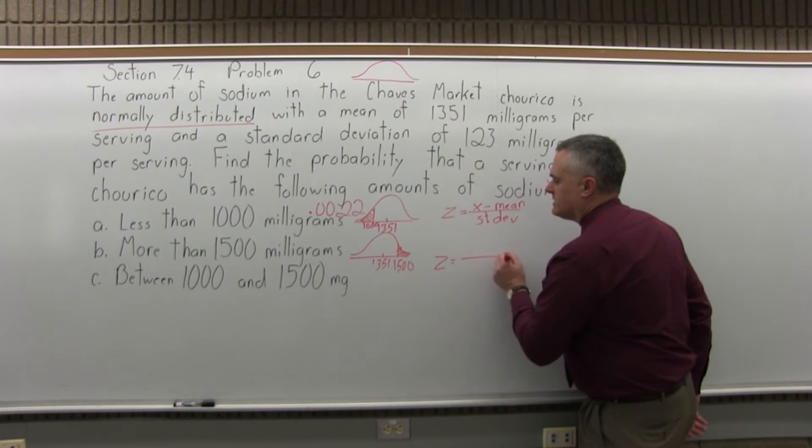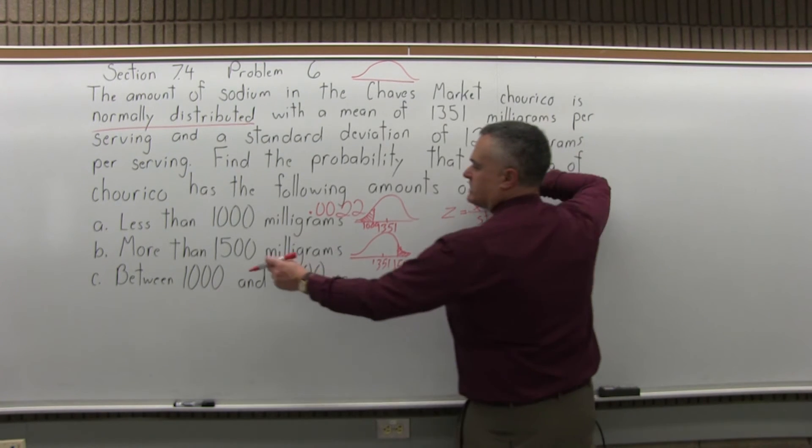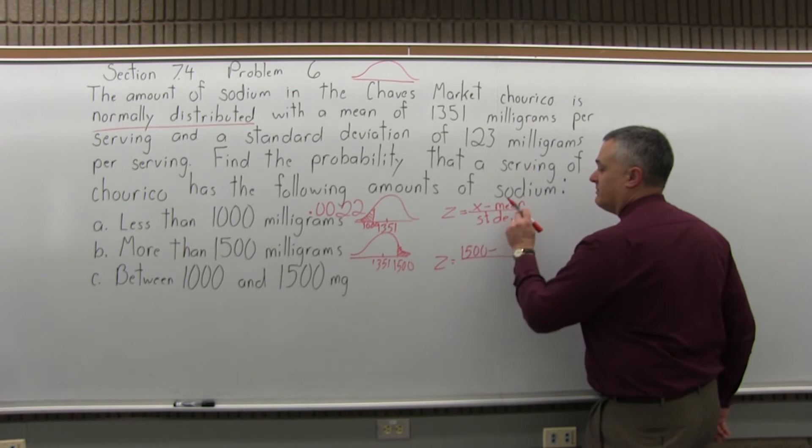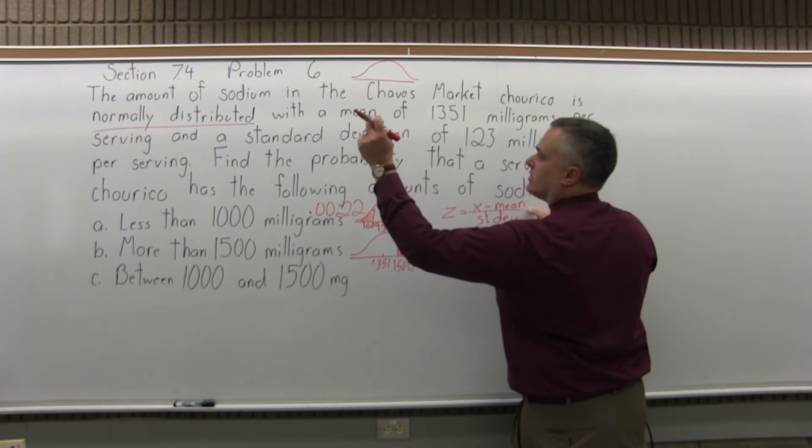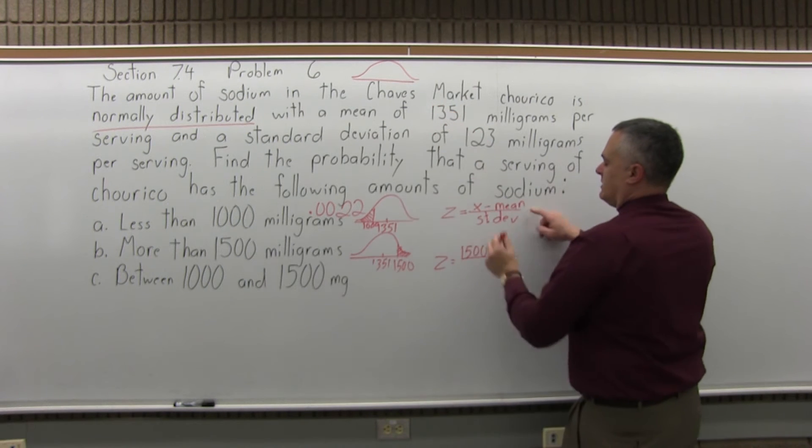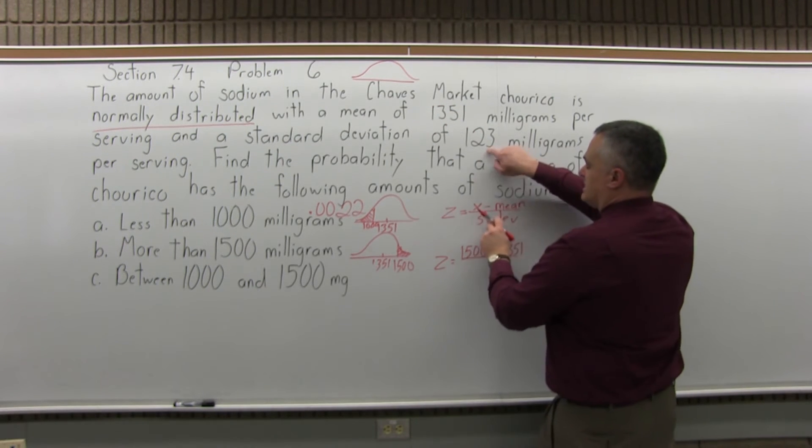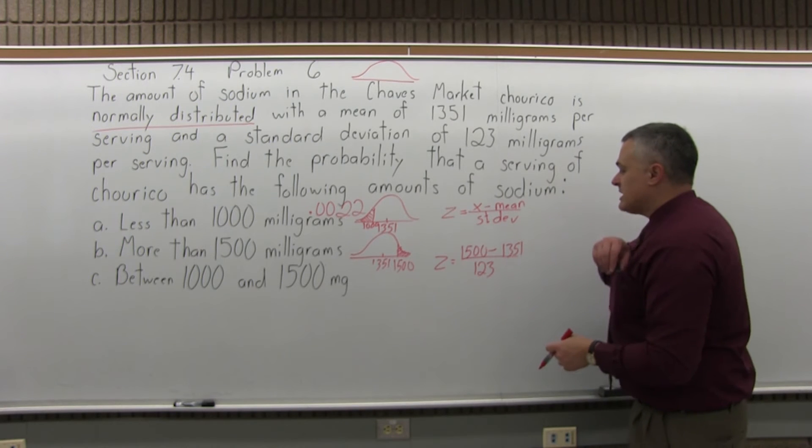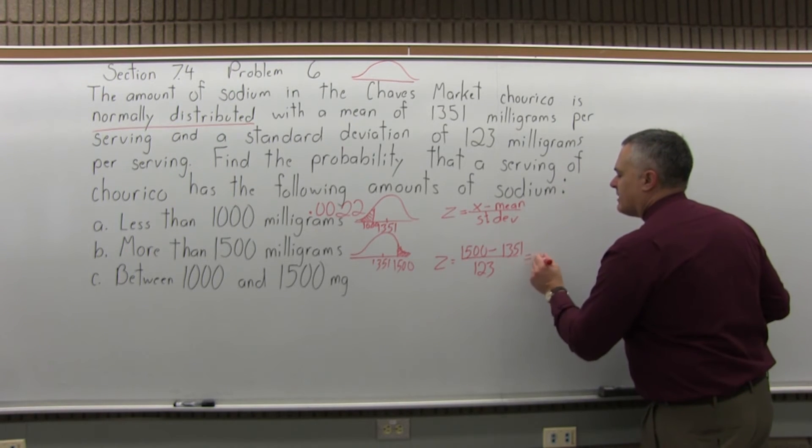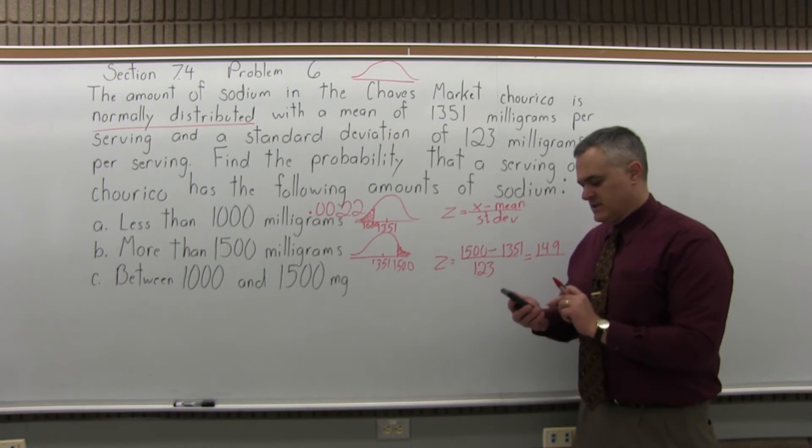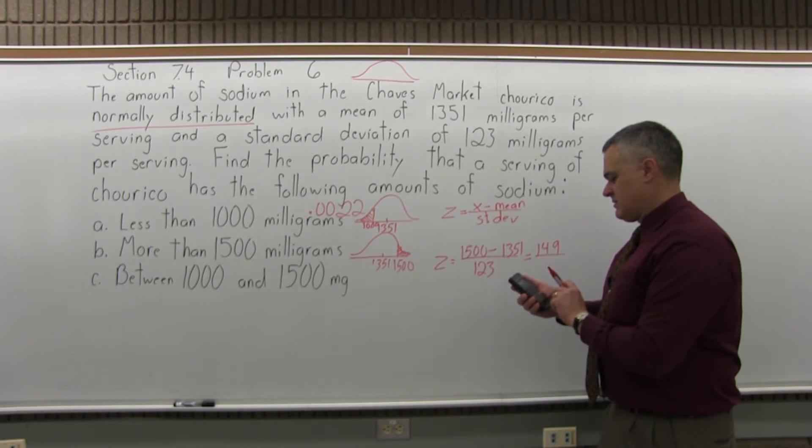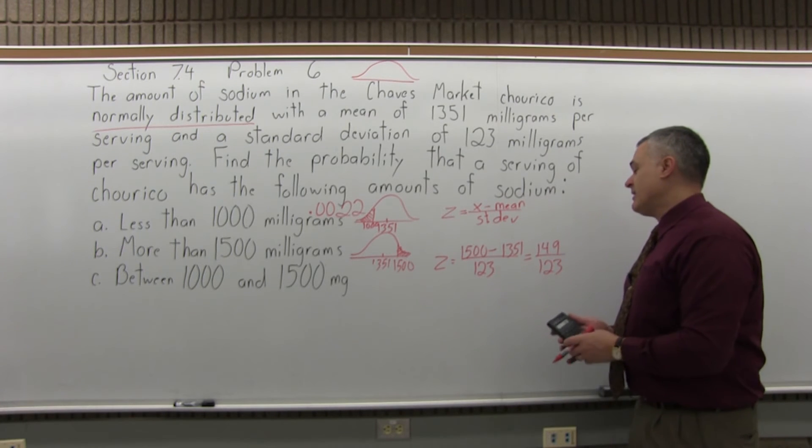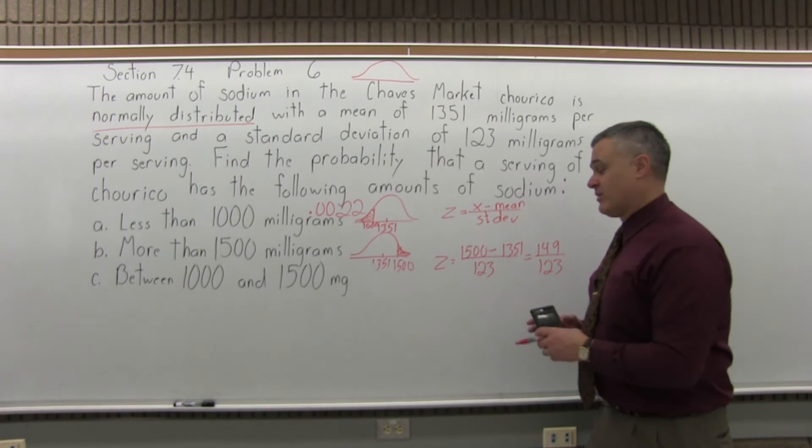We will use the Z-score formula. Z equals X, the number to convert into a Z-score, this time is 1,500, minus the mean or average value, which was 1,351, over the standard deviation, which is given as 123. Now subtract on the top. It should be 149. The next step of 149 divided by 123 I won't be able to do without the calculator.